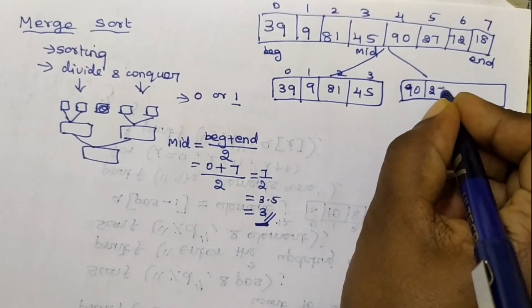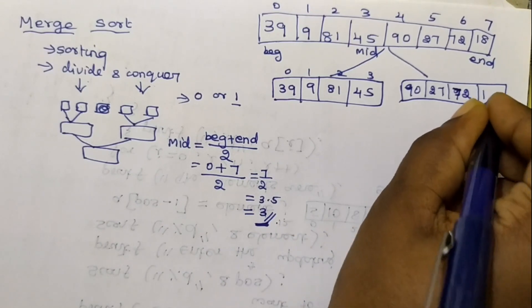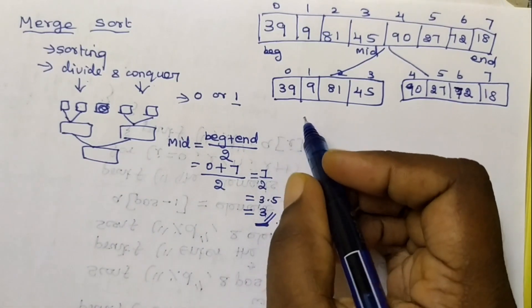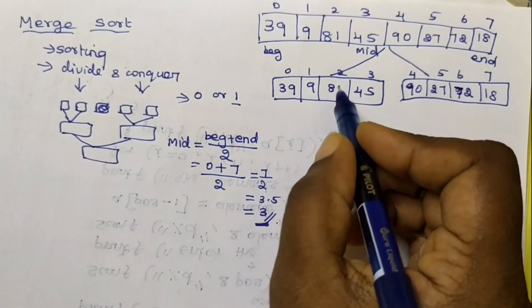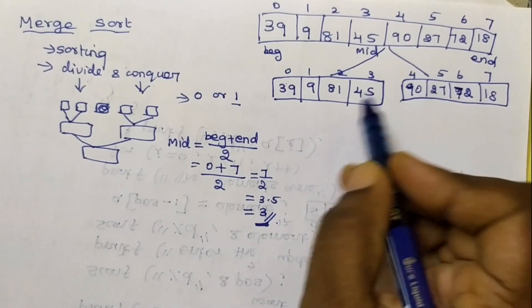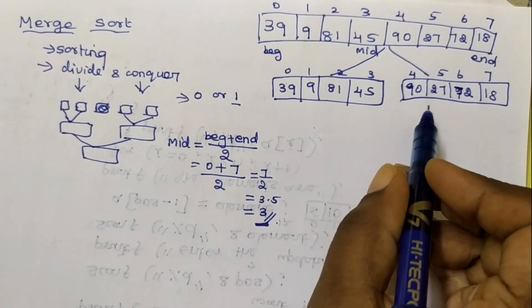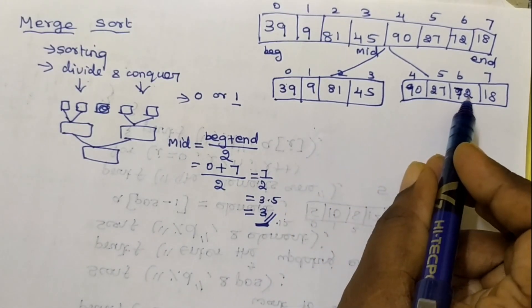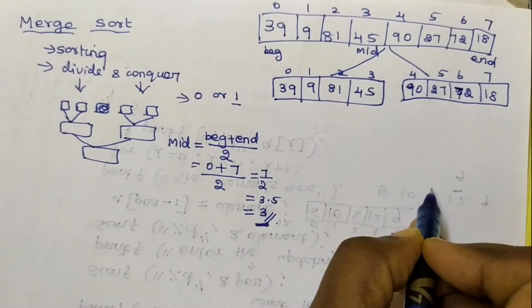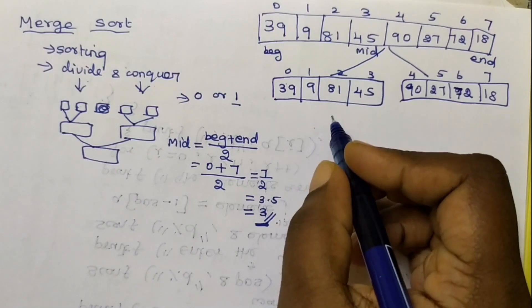For example, the array contains values such as 90, 27, 72, 80 at indices 4, 5, 6, 7. We again divide this subset until each subset has only one element. Once all elements are single elements, the divide phase is done.